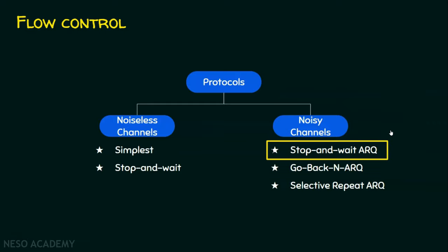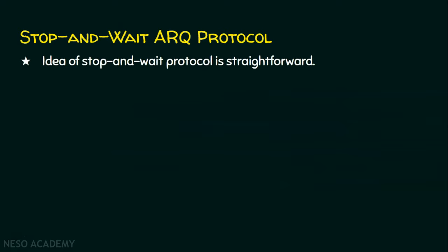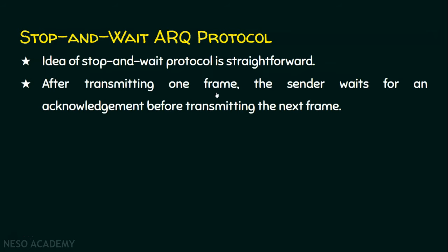The stop and wait protocol is a very simple protocol. The idea is straightforward: after transmitting one frame, the sender waits for an acknowledgement before transmitting the next frame. There are chances for the frame to be lost or the acknowledgement to be lost. If that happens, the sender will wait for an infinite amount of time, and the receiver will also wait for an infinite amount of time, and there will be no progress in the stop and wait protocol.